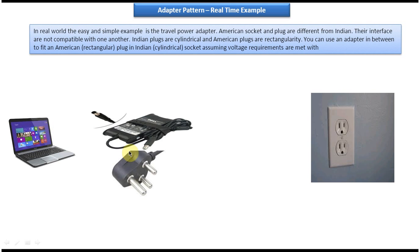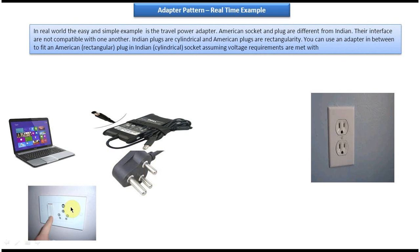On the left side you can see a laptop and laptop charger, and on the right side you can see an electrical socket in the USA. Suppose you are in India — your laptop charger plug will be cylindrical in shape, because in India the electrical socket accepts only a cylindrical plug. But in the USA, the electrical socket accepts only a rectangular plug.